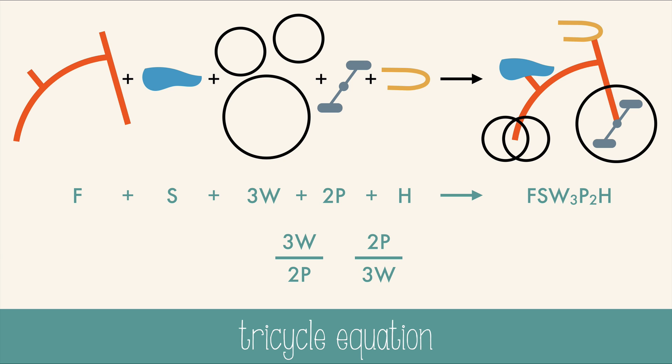Since we have 27 wheels we'll use the conversion factor with wheels on the bottom so that our units will cancel. 27 times 2 divided by 3 is 18, so we'll need 18 pedals.